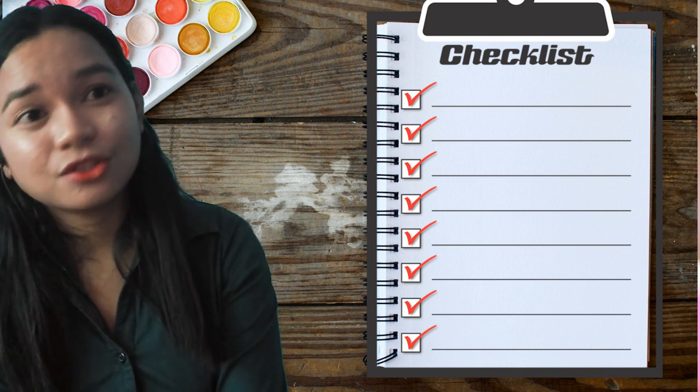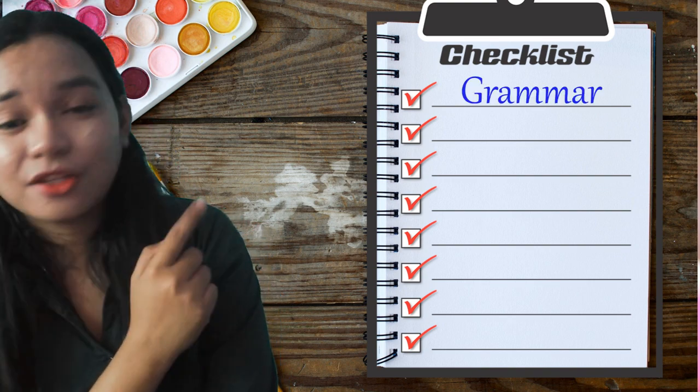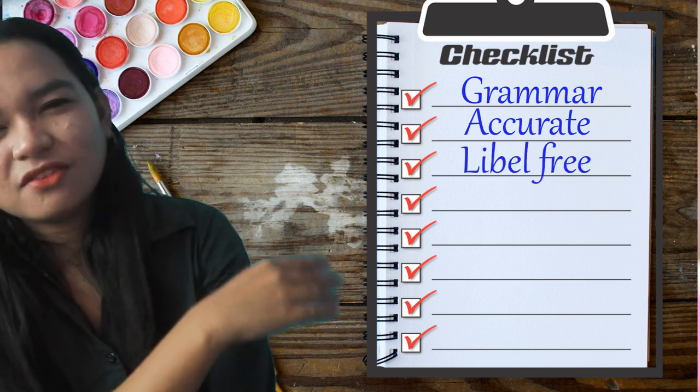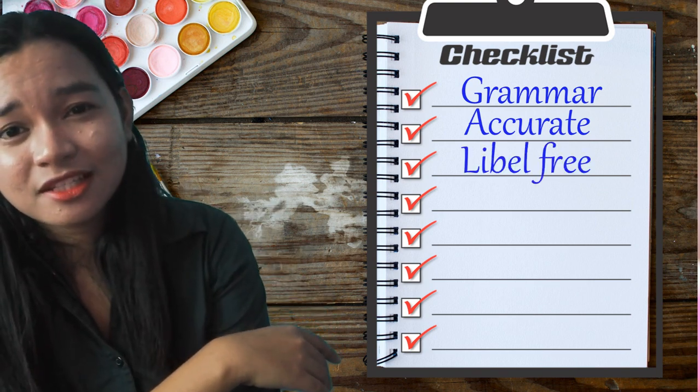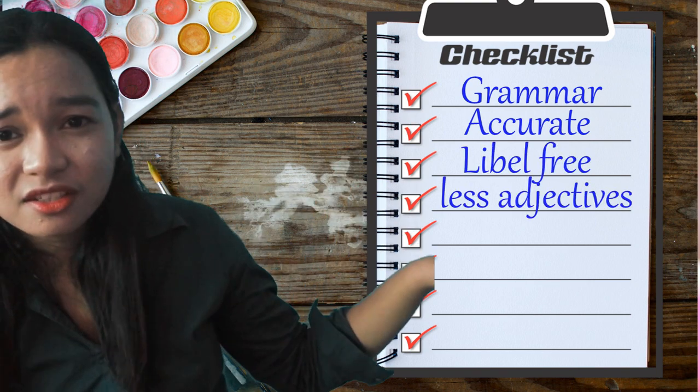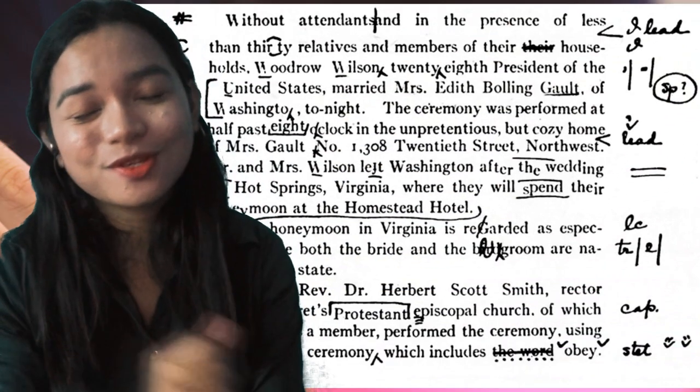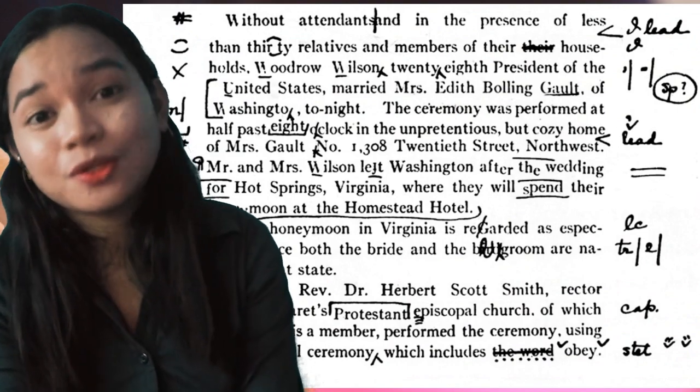It is the duty of the copyreader to check the grammar, the accuracy of the information, get rid of libelous statements and opinions, and cross out adjectives which make the story overridden. In short, the copyreader can rewrite the entire story if it is poorly written. Copyreading is much like the work of an English teacher correcting compositions. But copyreaders use copywriting symbols which are universally known by printers.